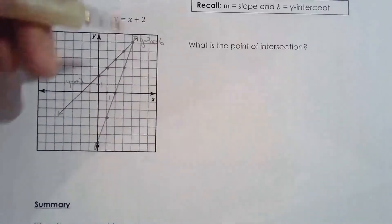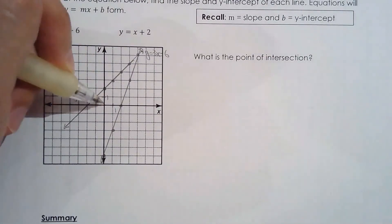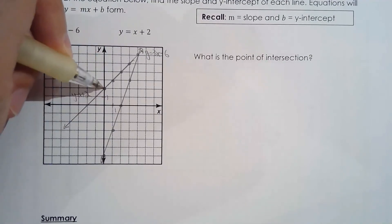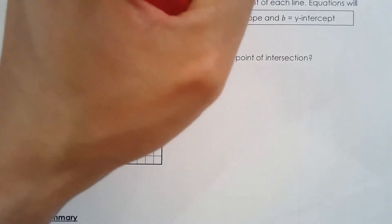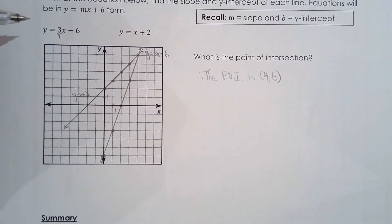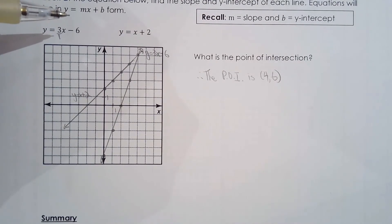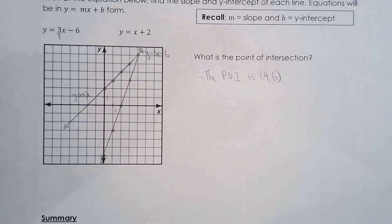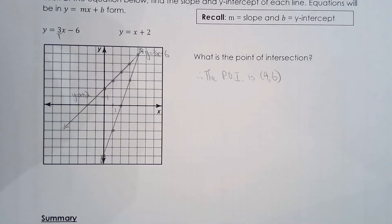Looking at the graph, the point of intersection is (4, 6), so (4, 6) is a solution to the linear system. In this lesson we are solving linear systems graphically — by graphing two or more lines and finding where they intersect. This is the first method of solving a linear system, and other techniques will be learned later in the unit.